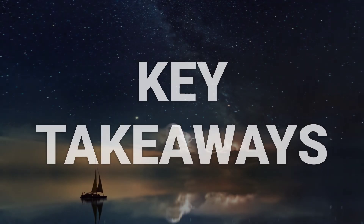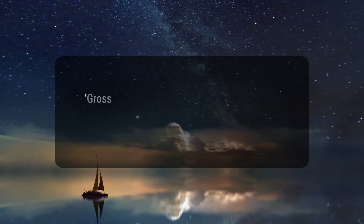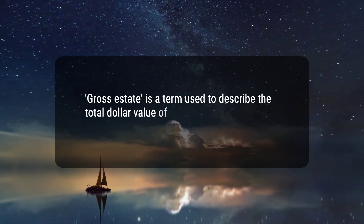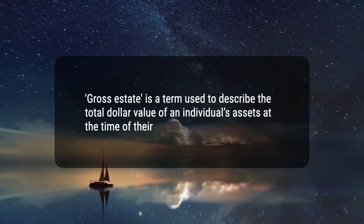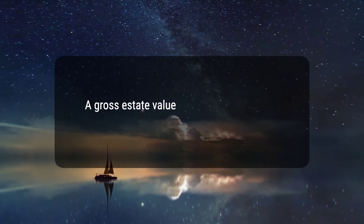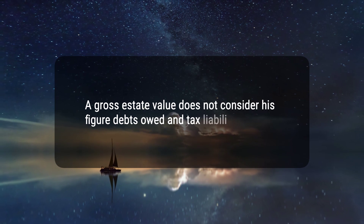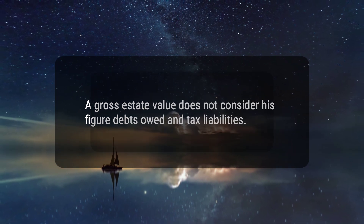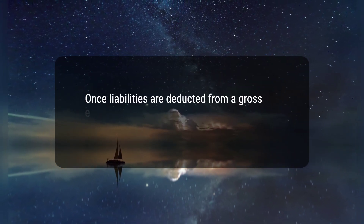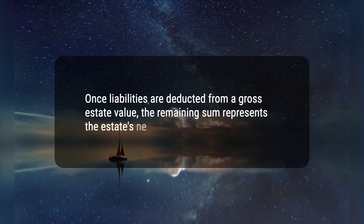Here are three key takeaways. 1. Gross estate is a term used to describe the total dollar value of an individual's assets at the time of their death. 2. A gross estate value does not consider debts owed and tax liabilities. 3. Once liabilities are deducted from a gross estate value, the remaining sum represents the estate's net value.